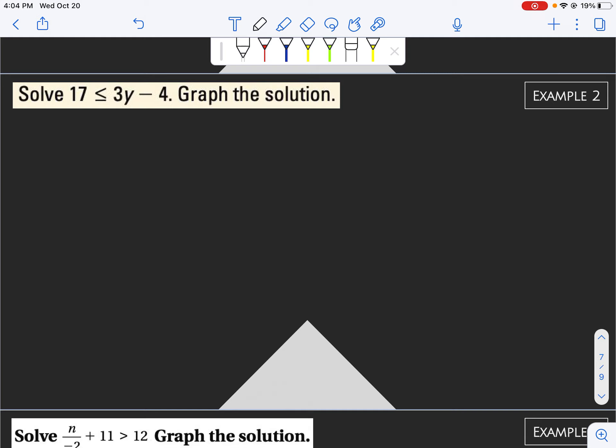Here, we have 17 is less than or equal to 3y minus 4. We start away from our y, so we start with this minus 4 by adding 4 to both sides.